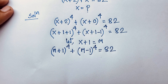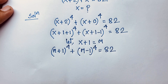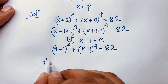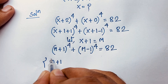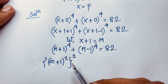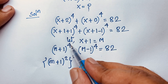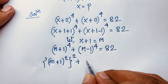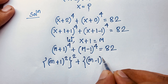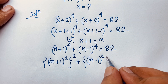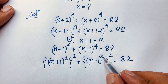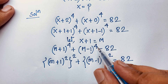At this moment, if I evaluate this expression, you can see here (m + 1) power is 4 — this expression will be (m + 1) bracket power 2, whole to the power 2. According to the exponential formula, 2 times 2 will be 4. Then here it will be (m − 1) bracket power 2, whole to the power 2, is equal to 82. These 2 times these 2 is also 4.